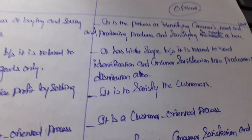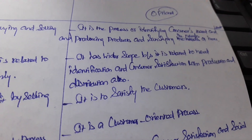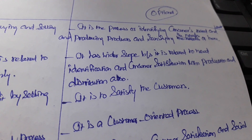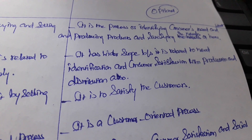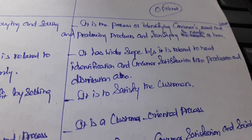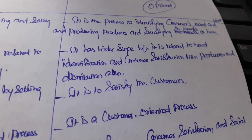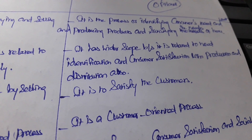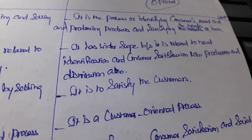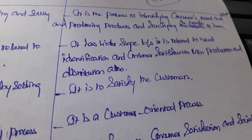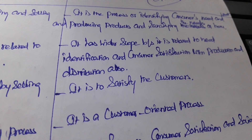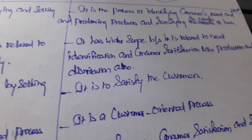The new concept of marketing is the process of identifying consumers' needs and wants, producing products, and satisfying those needs and wants. In the new concept, the aim is to satisfy consumers by producing products according to their needs and wants — satisfying consumers is the main focus.